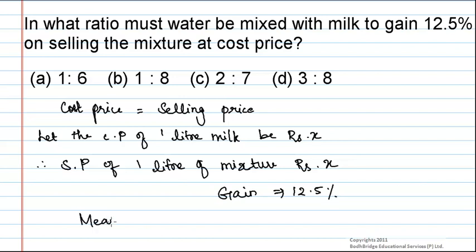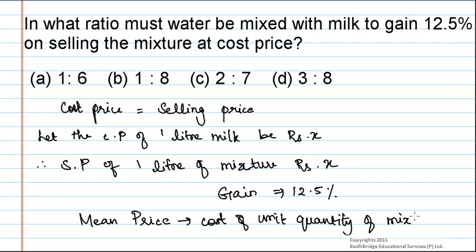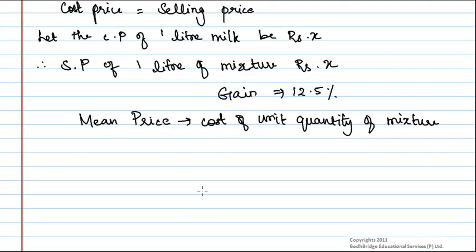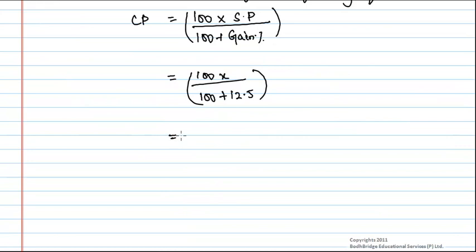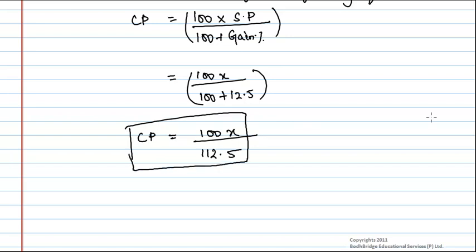The mixture represents milk mixed with water, and it is also given that gain should be 12.5%. Now, we have to find the mean price in order to find the ratio. Mean price is nothing but the cost of unit quantity of the mixture. We know the formula: cost price is equal to 100 multiplied by selling price divided by (100 plus gain percentage). Substituting the above values, we get 100 × X divided by (100 + 12.5), which gives the mean price — the cost price of 1 litre of the mixture.